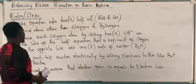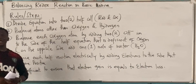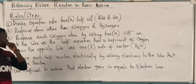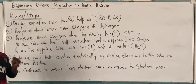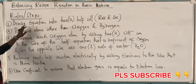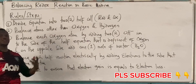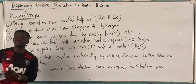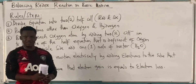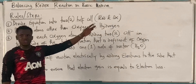We're going to look at balancing of redox reactions in basic medium. Just like we saw in the acid medium, step number one is to divide the equation into two half cells, making use of the oxidation numbers — reduction and oxidation.